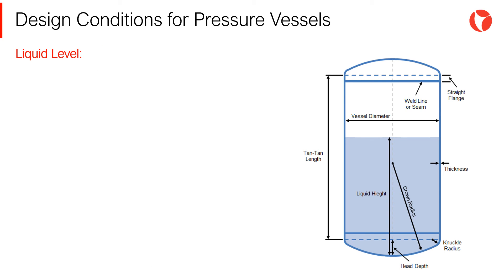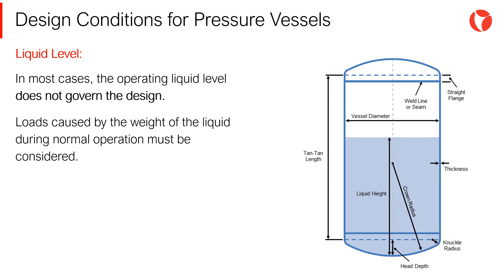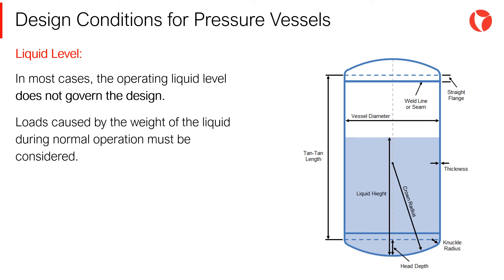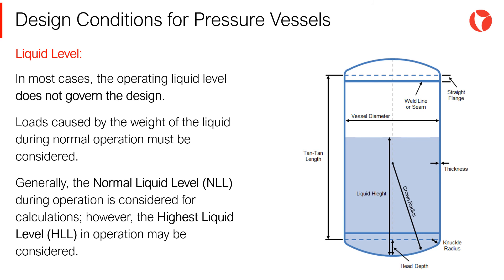In most cases, the operating liquid level does not govern the design. Still, especially for large horizontal vessels, the loads caused by the weight of the liquid during normal operation must be considered. Generally, the normal liquid level (NLL) during operation is used for calculations. However, from a conservative point of view, the highest liquid level (HLL) is sometimes considered.